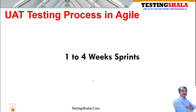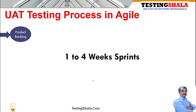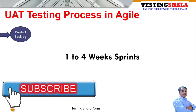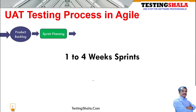The starting point normally in any agile project is the product backlog, which gets developed by product management by discussing with the customers. Then there will be a sprint planning activity that happens with the scrum master and developers, and then a sprint backlog will get created.